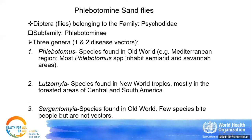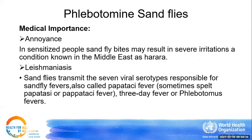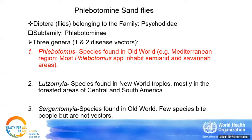The family is Psychodidae and the subfamily is Phlebotominae. Within this subfamily there are three genera. The Phlebotomus species are found in the Old World and are the vectors that transmit Leishmaniasis. The Lutzomyia are found in the New World tropics, mostly the forested areas of Central and South America. The Sergentomyia species are found in the Old World, but few species bite people and so are not known to be vectors.